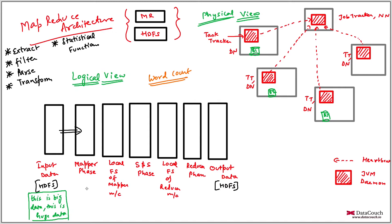We have big data in HDFS. In the mapper phase — responsible for extracting, filtering, parsing, and transforming — it will parse the data and emit a value of one along with each word. Counting will happen in the reducer phase. So the intermediate output looks like: 'big, 1', 'data, 1', 'huge, 1', and so on. This intermediate data is stored on the mapper local file systems of the different mapper machines.